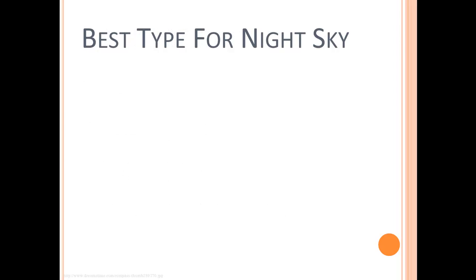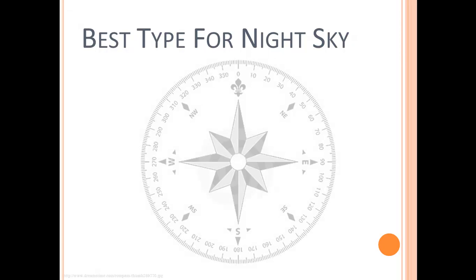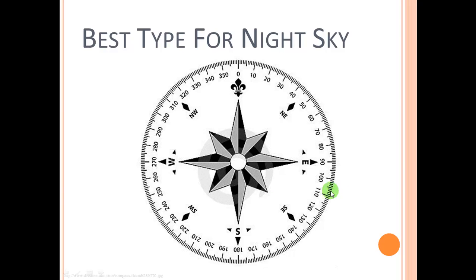The best type of compass rose for the night sky would be a circular protractor. And if you just take one of these and you lay it down right on top of a table, what you want to do is just make sure that 0, or North, is pointing towards Polaris.